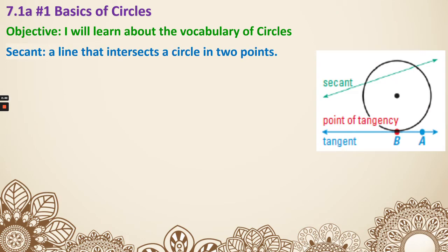Secant. Secant is a line that intersects a circle in two points. I see one point here, one point here, so that is a secant.